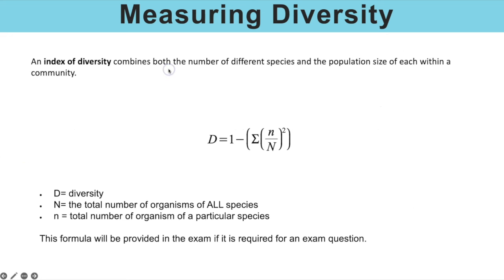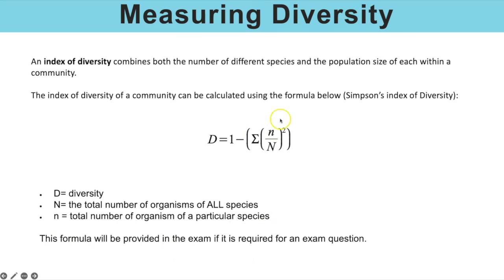Another way to measure diversity is using the index of diversity, which combines both the number of different species and the population size of each within a community. The formula is D = 1 − Σ(n/N)², where D is diversity, N is the total number of organisms of all species, and lowercase n is the total number of organisms of one particular species. You need to work out (n/N)² for every species present and then sum them together. This formula is provided in the exam.